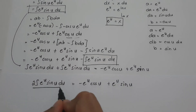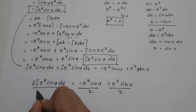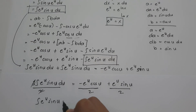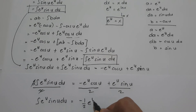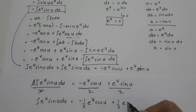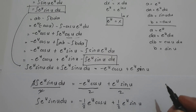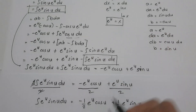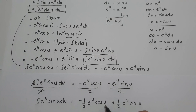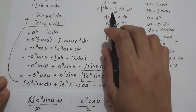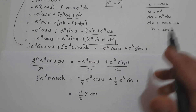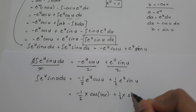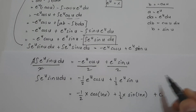Dividing both sides by 2, the anti-derivative of e raised to u sin u du equals negative one-half e raised to u cosine u plus one-half e raised to u sin u. Back-substituting u = ln x and e raised to u = x, the final answer is negative one-half x cosine(ln x) plus one-half x sin(ln x) plus C.